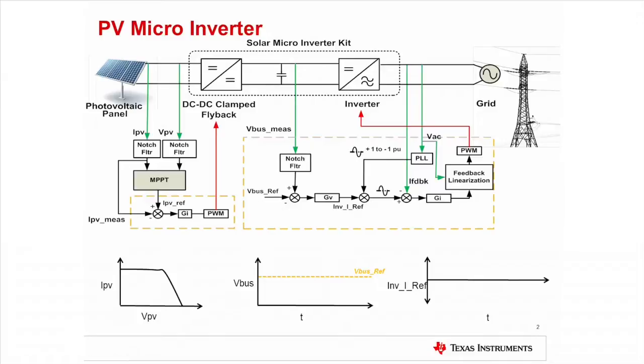Now let's look at what happens as the inverter starts. In the beginning, the input voltage of the panel is at the open circuit voltage and there is no current drawn. As the DC-DC stage is started, some current is drawn from the PV panel. This starts charging up the DC link voltage between the flyback and the inverter stage.